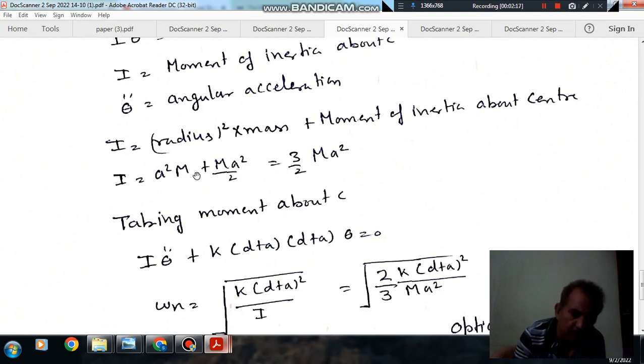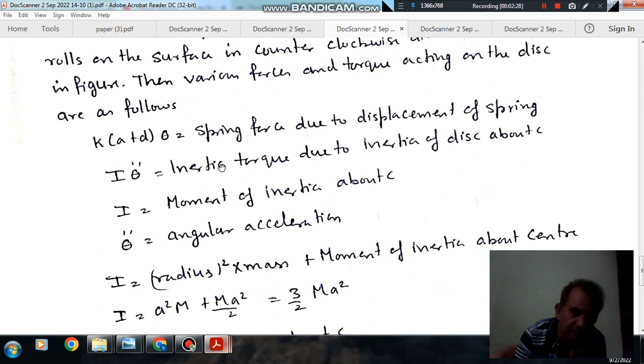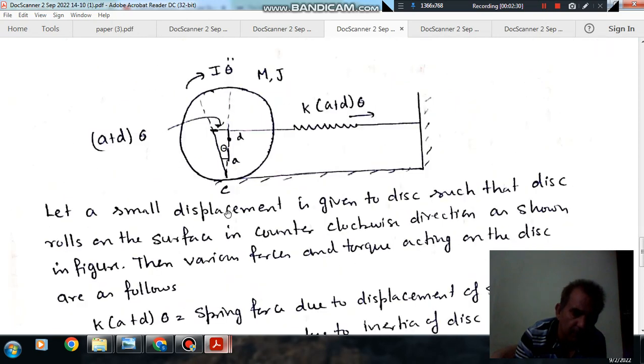So this is mA²/2 plus mass times radius squared, which is mA². So I is 3/2·mA². I is moment of inertia about this point C. Now we can take moment about this point.